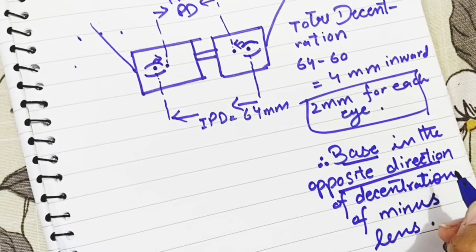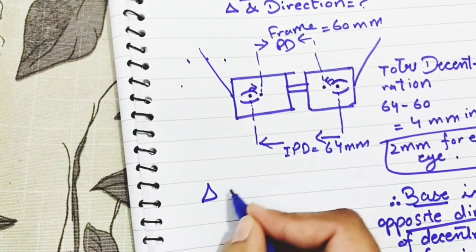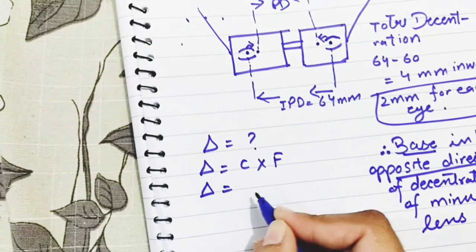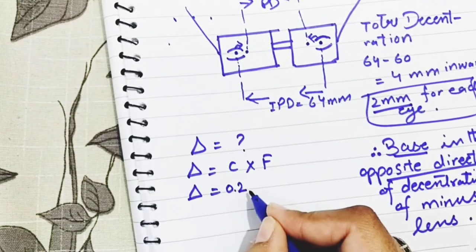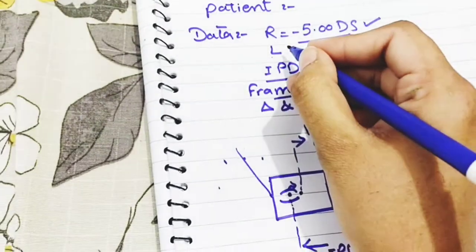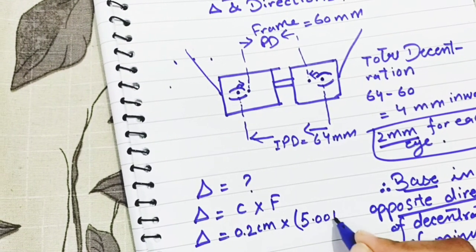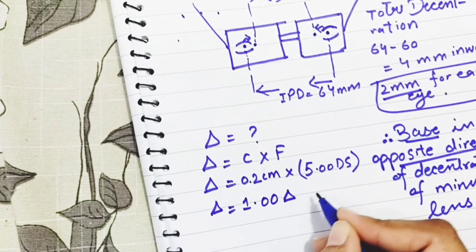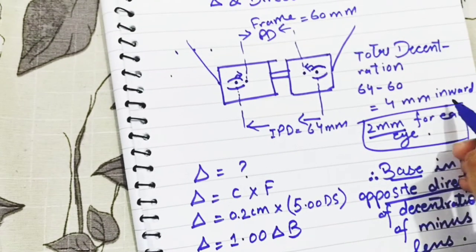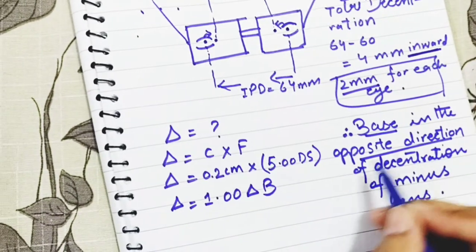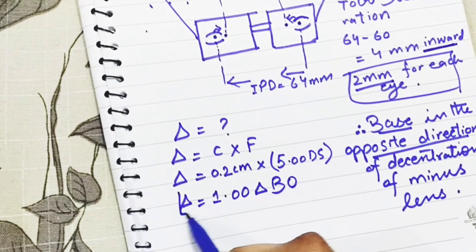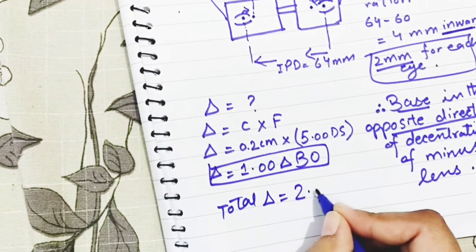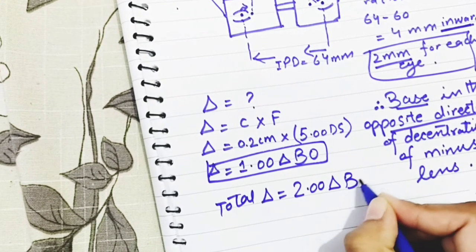Here is an example of a minus lens, so the base will be in the opposite direction of decentration. Using the formula: prismatic effect equals decentration (c) multiplied by lens power (f). Decentration is 2 mm, converted to centimeters = 0.2 cm, multiplied by lens power of minus 5 diopters. Prismatic effect equals 1.00 prism diopter. Since decentration is inward, base will be outward — base out. Total prismatic effect is 2 prism diopters base out.